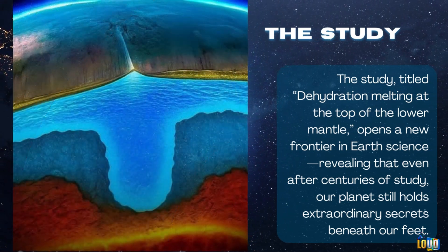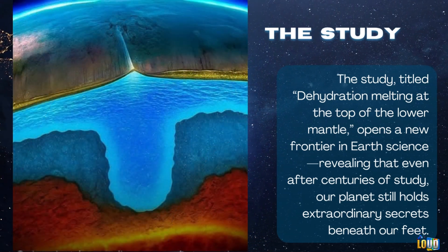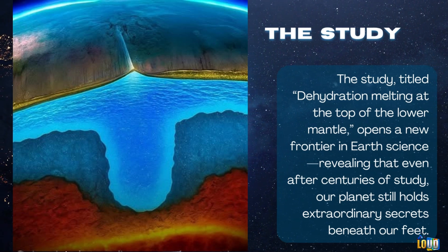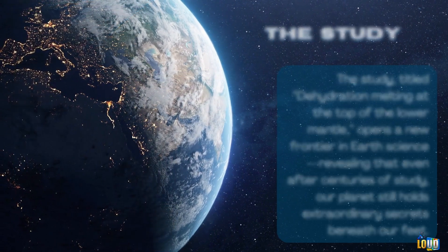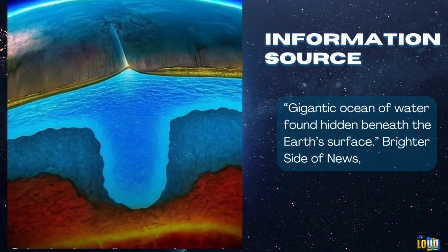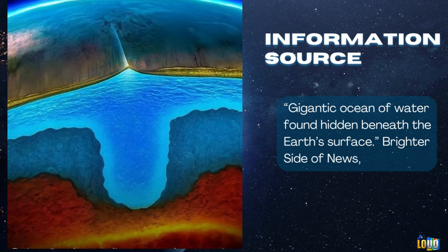The study, titled 'Dehydration Melting at the Top of the Lower Mantle,' opens a new frontier in Earth science, revealing that even after centuries of study, our planet still holds extraordinary secrets beneath our feet. The information source is 'Gigantic Ocean of Water Found Hidden Beneath the Earth's Surface' by Brighter Side of News.